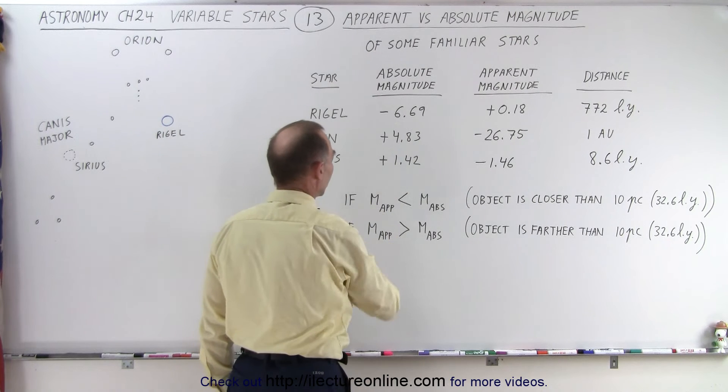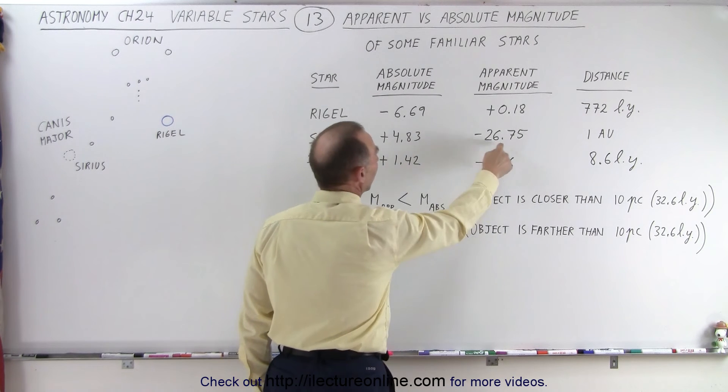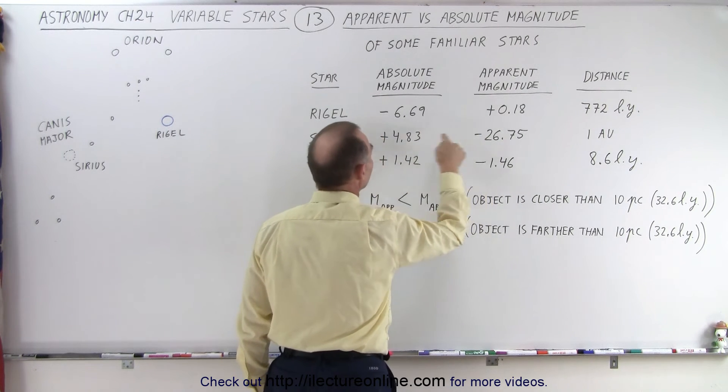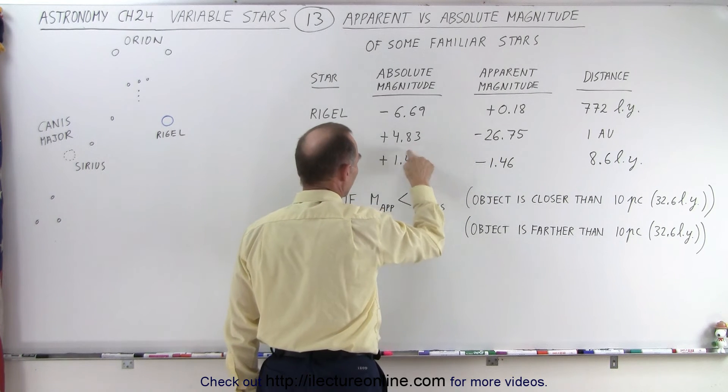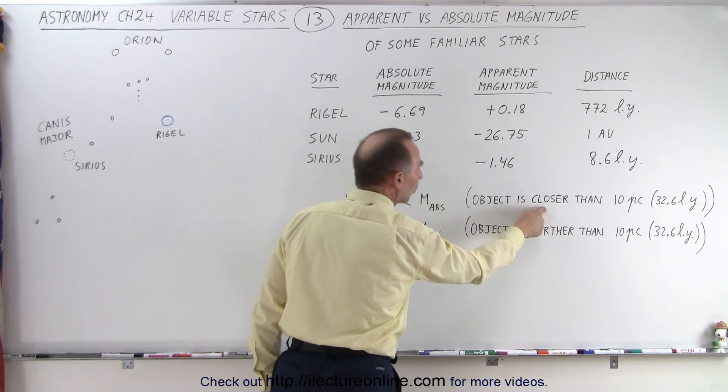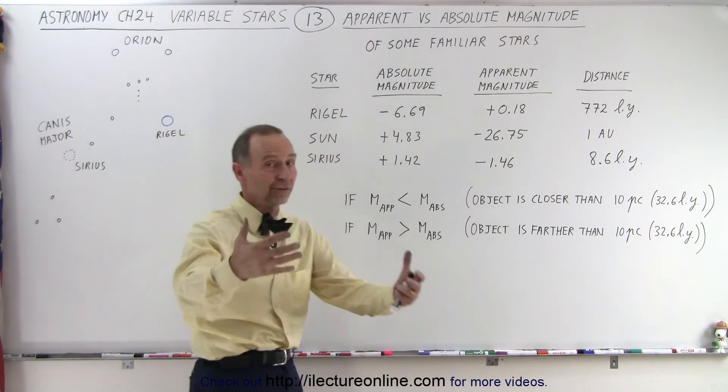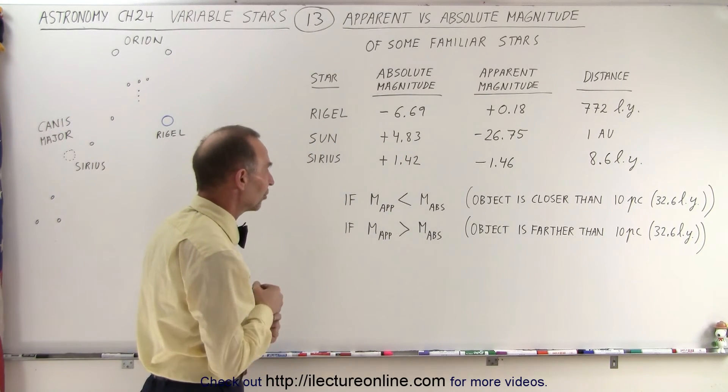How about the sun? Well, here we can see that the apparent is a much smaller number than the absolute because negative is smaller than a positive number. So therefore, the object is closer than 10 parsecs. And sure enough, the sun is only one astronomical unit away, much closer.